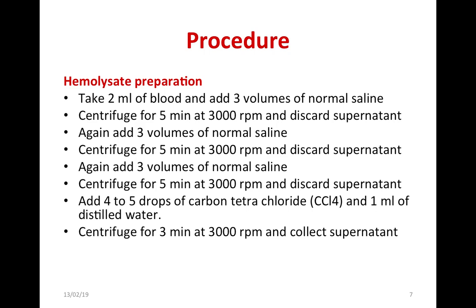The second step is lysis. To facilitate lysis, add four to five drops of carbon tetrachloride and 1 ml of distilled water, then centrifuge again at 3000 rpm for three minutes. Now collect the supernatant — unlike the previous steps where we discarded it. This supernatant contains the hemoglobin that has come out of the RBCs.